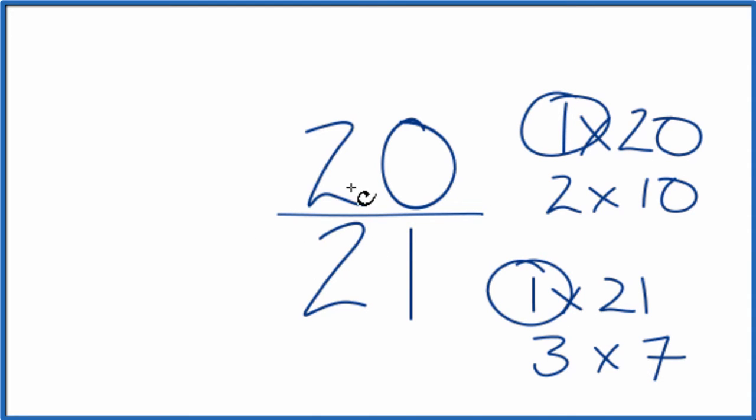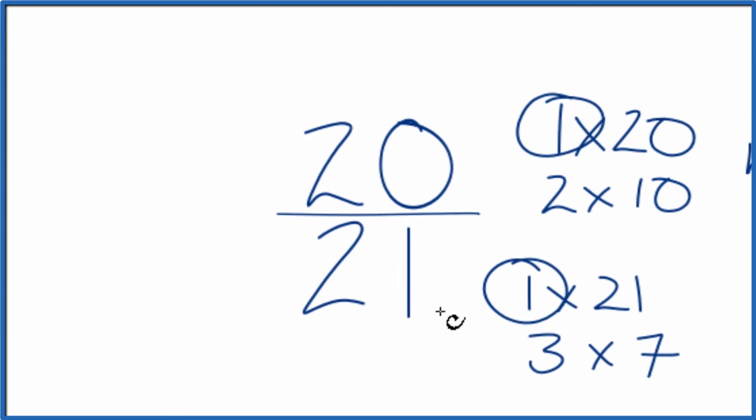So what that means, we'll divide 20 by one and 21 by one to simplify 20 21sts.